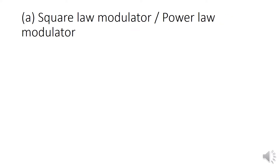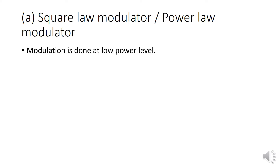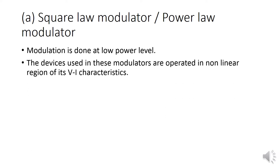Generation of AM waves using non-linear modulation: a simple diode, transistor, or FET can be used as a non-linear modulator by restricting the operation over non-linear characteristics. This method is only used for small signal amplitude modulation. The square law modulator, also called power law modulator, is mainly done at low power level.